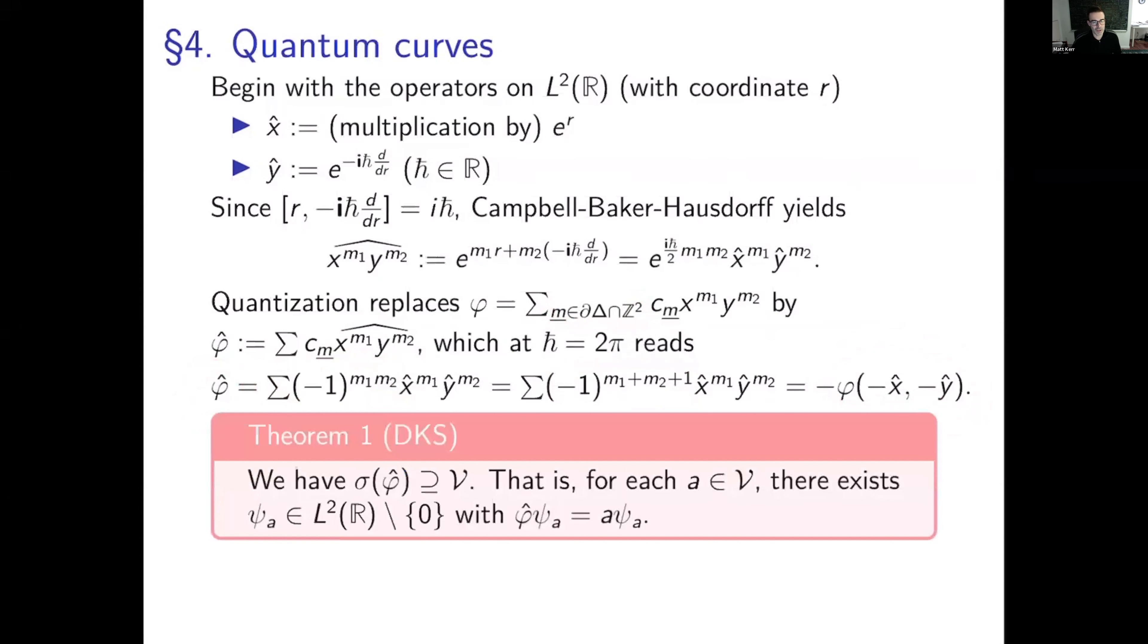So the first theorem is that the spectrum of phi hat actually contains our attractor point set. In general, this just is always true for the 15 examples. That is, for each a in V, there exists an eigenfunction psi a in L2 of R that's non-zero with phi hat psi a equals a psi a. Okay, but it has to be an attractor point or it doesn't work. And asymptotically, 100% of sigma of phi hat belongs to V. In other words, if you look at the ratio of all eigenvalues to the eigenvalues that belong to V, that goes to 1 as you go to infinity. But we can't prove that they're all in there. Maybe they all are. It's left open. And maybe someone in the audience has an idea how to prove better than asymptotically 100%.